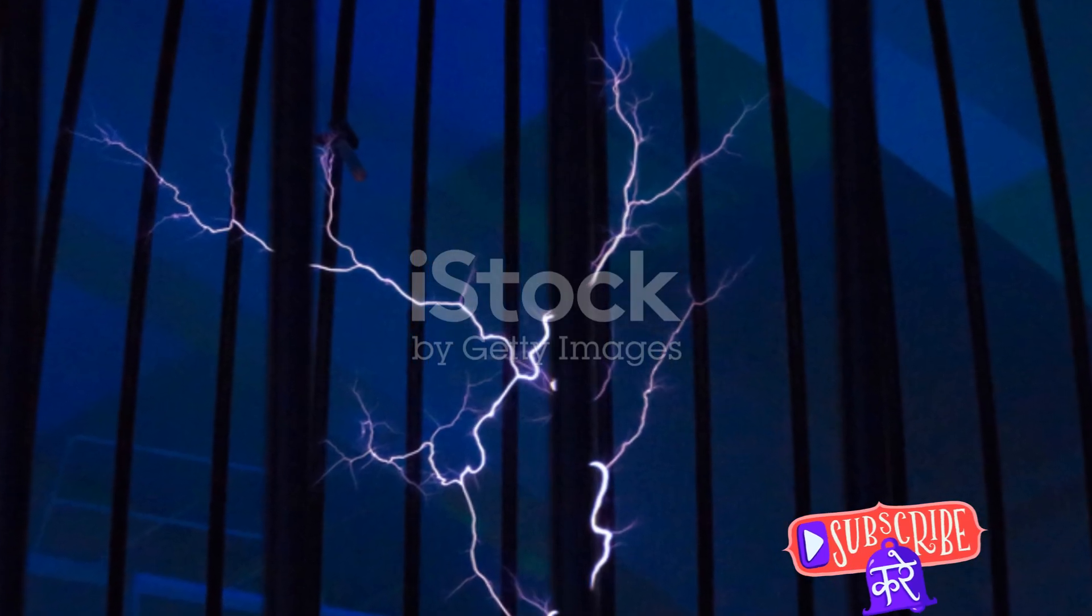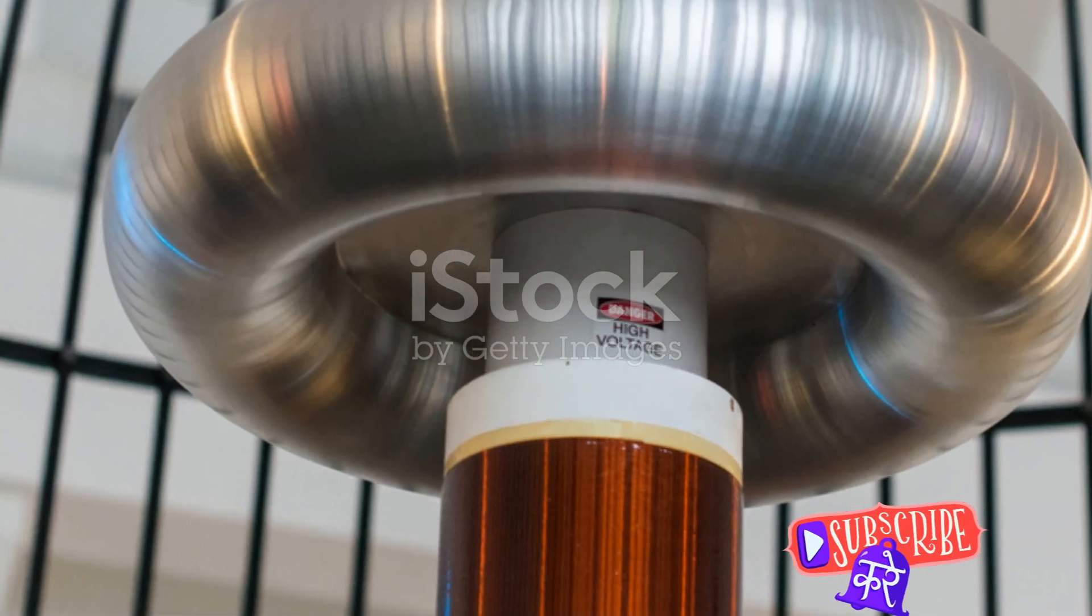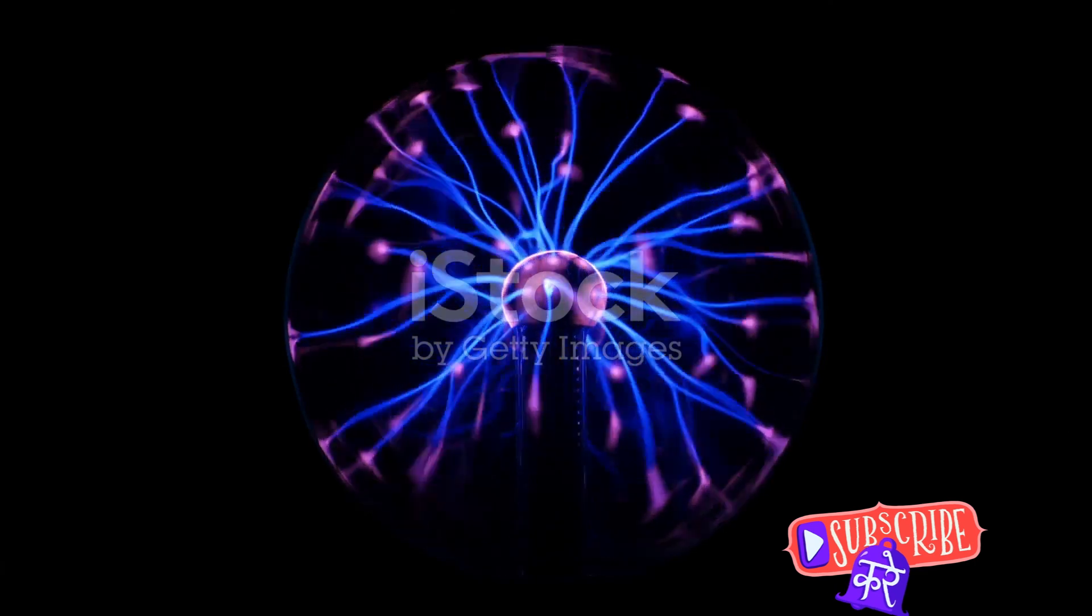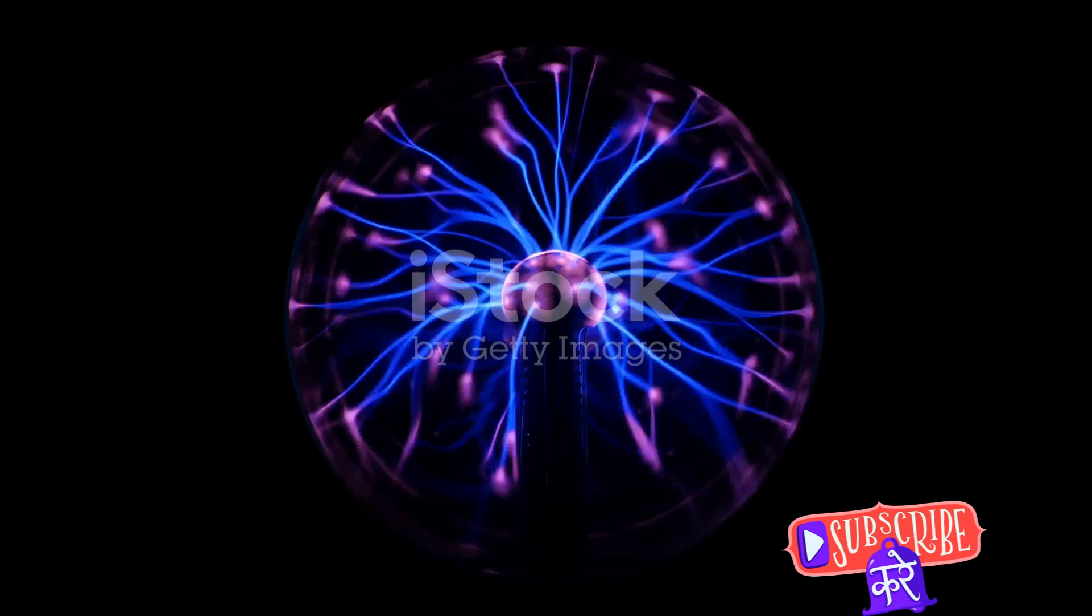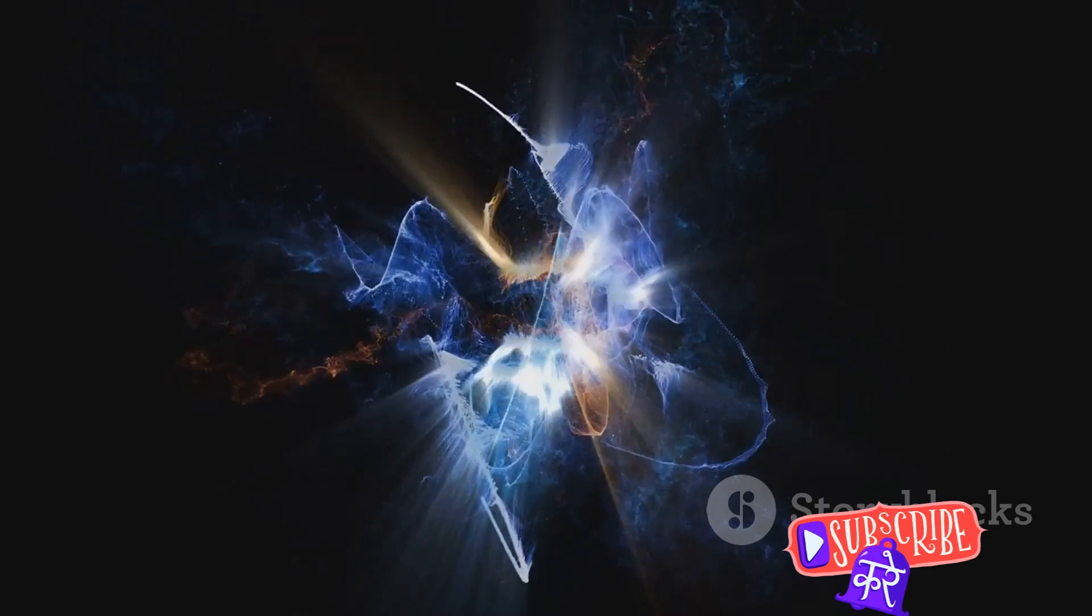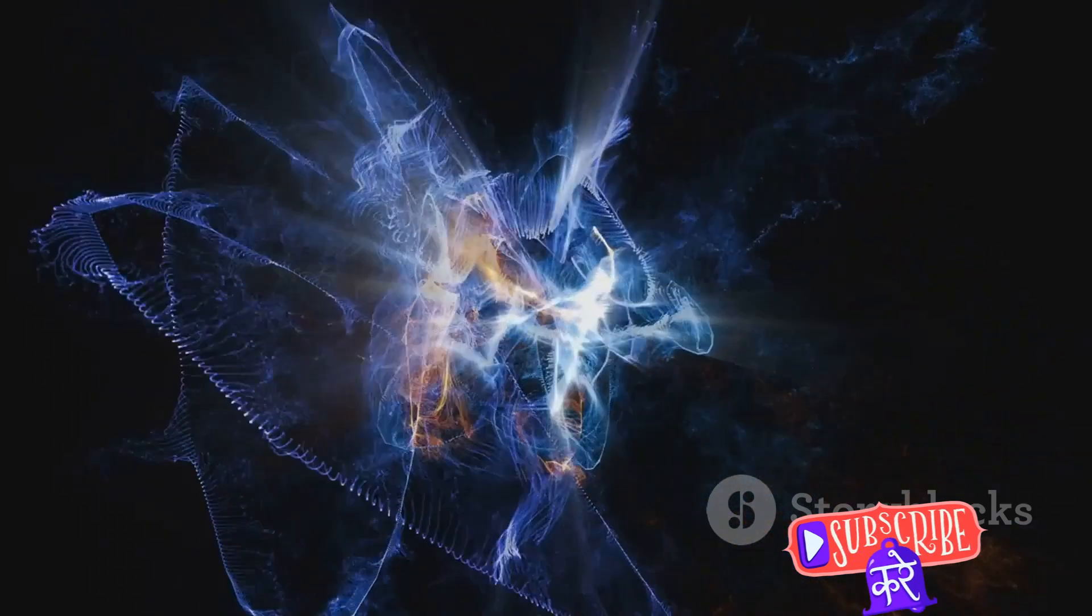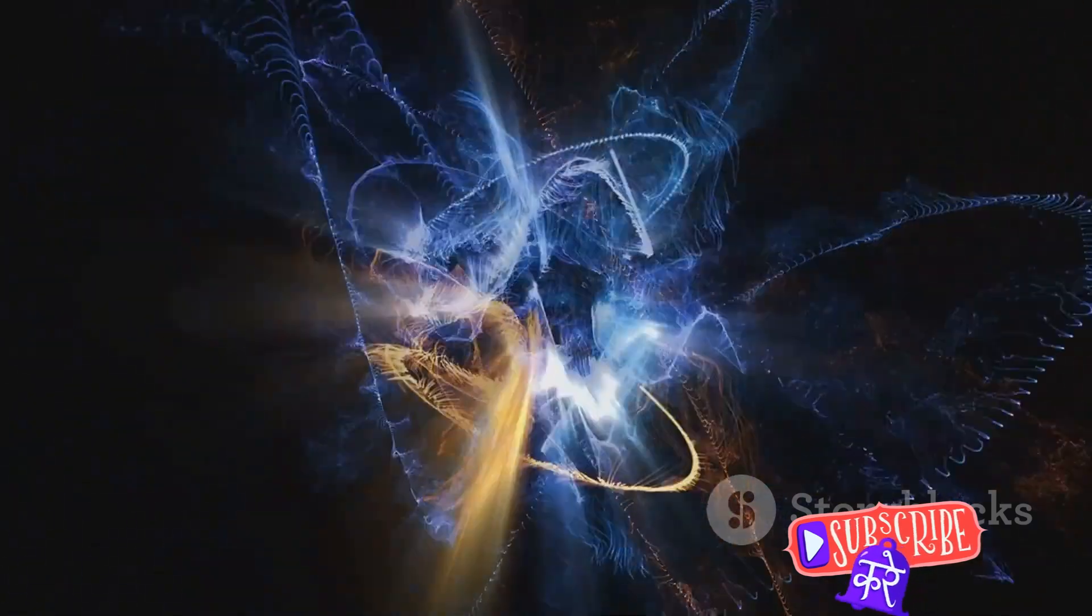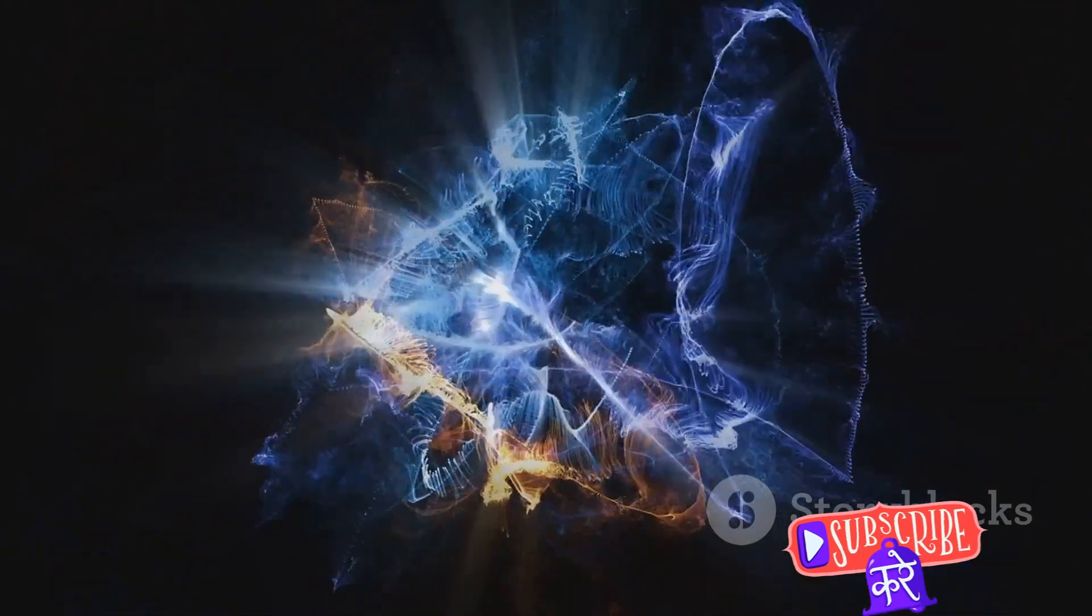Now, how does this relate to a Tesla coil? It's all about the primary and secondary coils. These two coils are designed to have the same resonant frequency. The primary coil, powered by the power source, starts the process. It creates an oscillating magnetic field that resonates at its natural frequency. Here's where the magic happens. The secondary coil, located within the magnetic field of the primary coil, starts to resonate in response. Because the two coils are working at the same resonant frequency, the secondary coil is able to absorb a lot of energy from the primary coil's magnetic field.